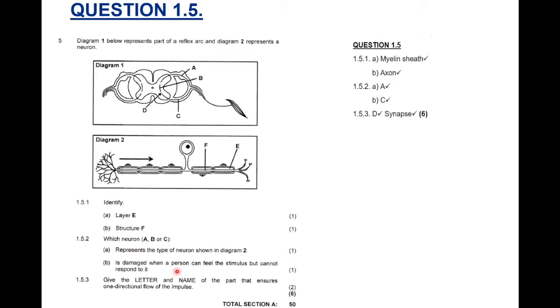Which neuron, A, B, or C, is damaged when a person can feel but cannot respond? So, you can feel the stimulus, but you cannot respond to the stimulus. So, obviously, the impulse is not going to be traveling to the motor neuron because it's damaged and it won't get to the effector. It won't get to the muscle. So, you cannot respond. So, what is damaged? The motor neuron is damaged. And where is the motor neuron? C. Then, 1.5.3: Give the letter and name of the part that ensures one-directional flow of the impulse, meaning that allows the impulse to travel in one direction, sensory neuron, interneuron, motor neuron. And that, obviously, we can see is D and that gap or that part that allows the impulse to travel in one direction is a synapse.